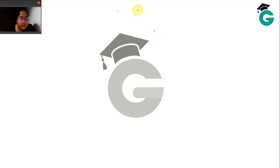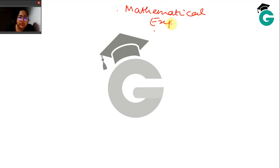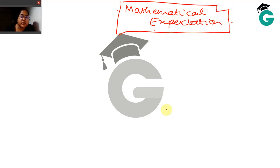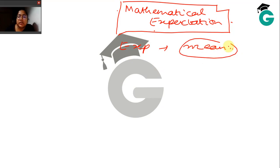In this video we are going to be starting with mathematical expectation. Expectation is a concept you must be familiar with — it is simply the mean in a sense. In the case of a random variable, if you wanted to define the expectation of X, where X is the random variable,